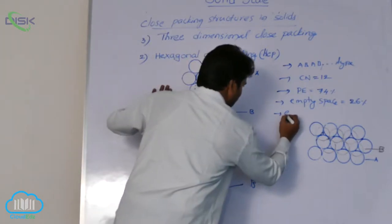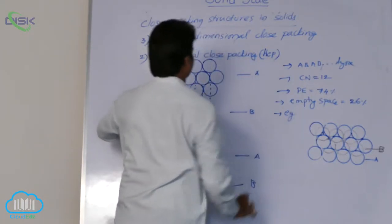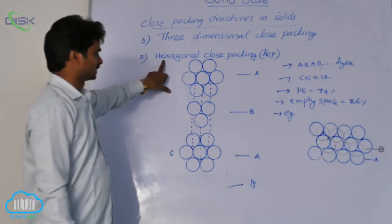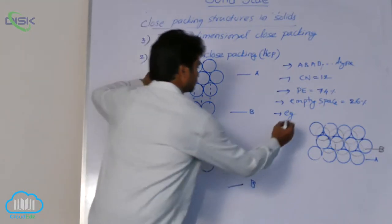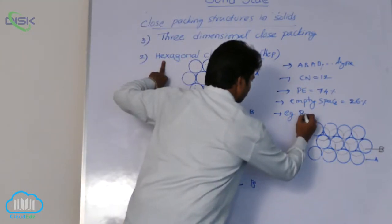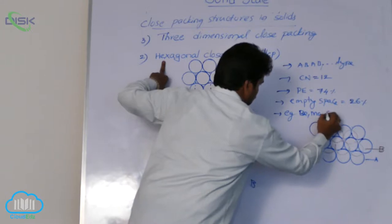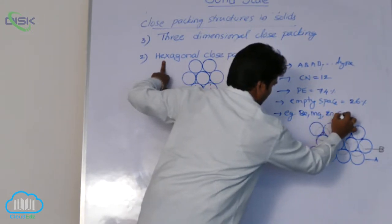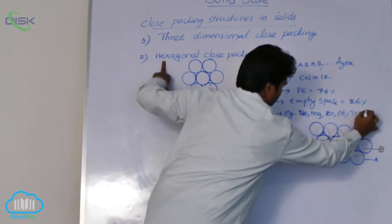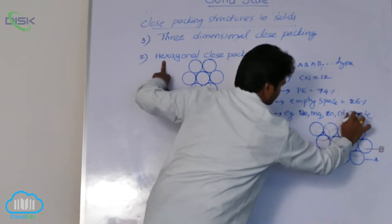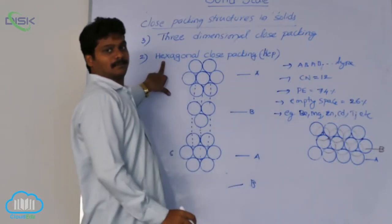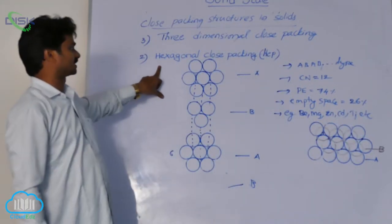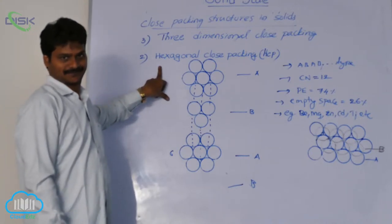What are examples of metals that have hexagonal close packing geometry? The examples include beryllium, magnesium, zinc, cadmium, and titanium — these are metals which adopt hexagonal close packing geometry.